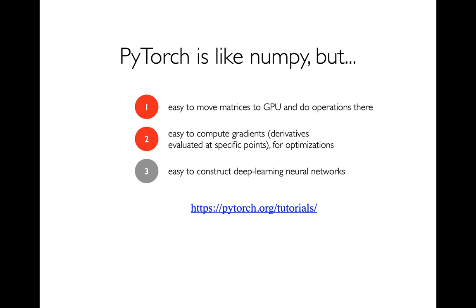It's also going to be very easy to compute gradients. For those of you who have taken calculus — which I'm not assuming — a gradient is just a derivative evaluated at a specific point. In calculus, we're often trying to maximize or minimize something, and derivatives and gradients are important for various optimization techniques. The things we're going to be optimizing here are machine learning models — finding the best coefficients so that, say, a linear model has the minimum error.